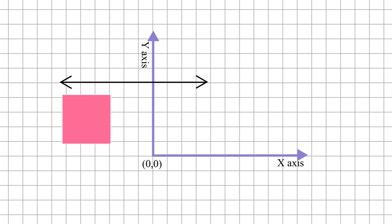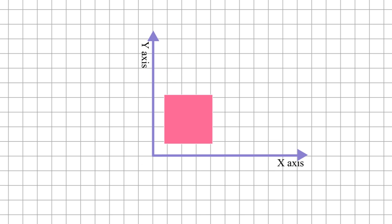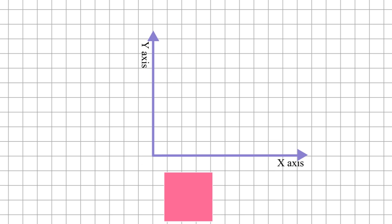Similarly, if you want to move it to the left side you have to provide fromXDelta to toXDelta, but this time the toXDelta value will be negative. For moving in the upward direction the attributes will be fromYDelta to toYDelta. The fromYDelta value will be 0 and toYDelta will be a negative number. Similarly, if you want to move it downward then fromYDelta is 0 and toYDelta will be a positive number. The value depends on how much you want to move.